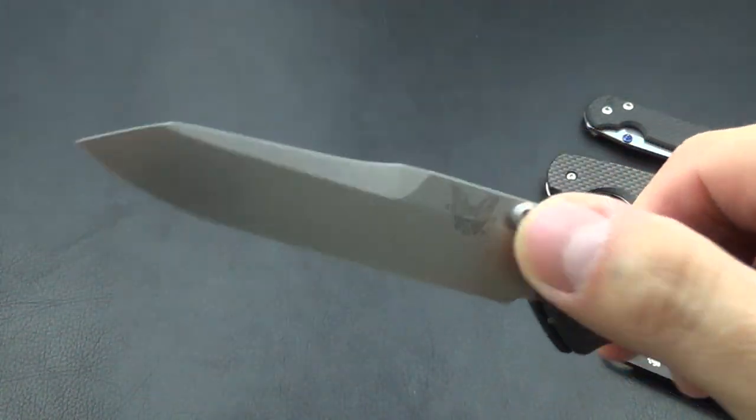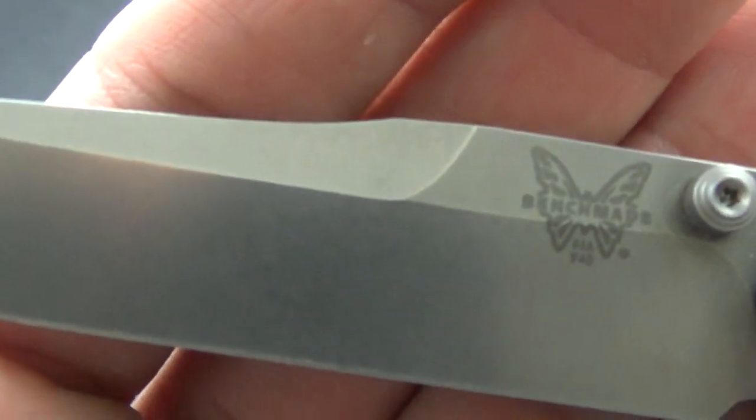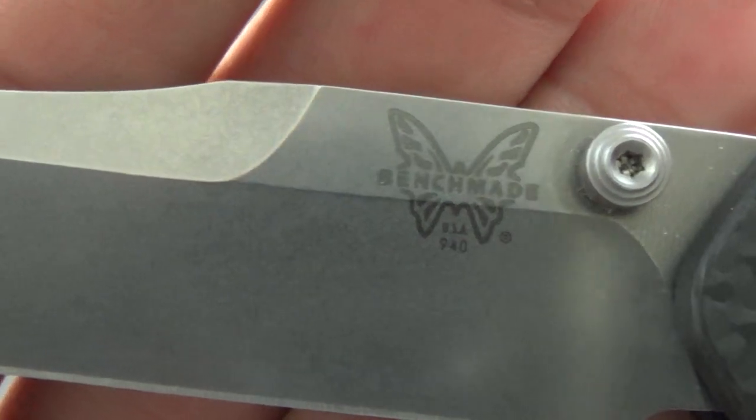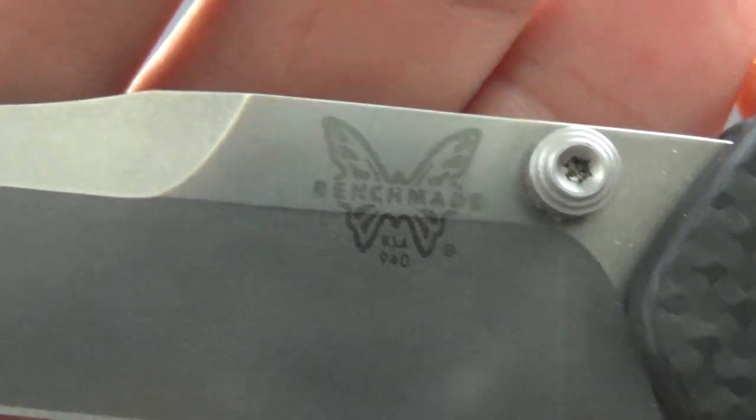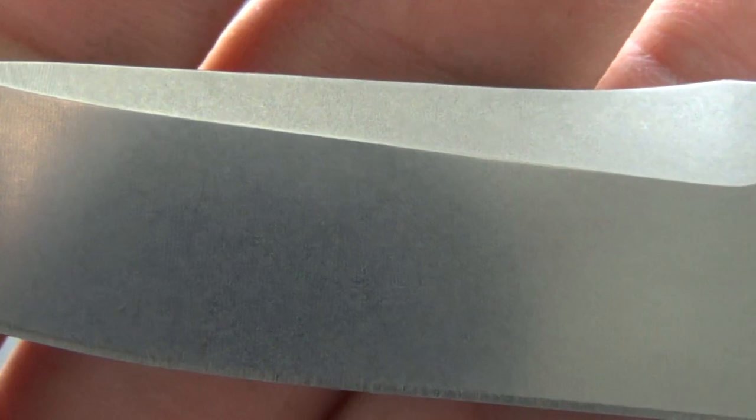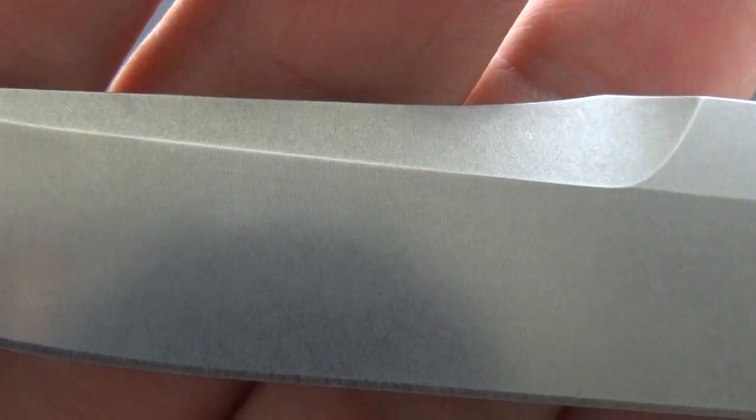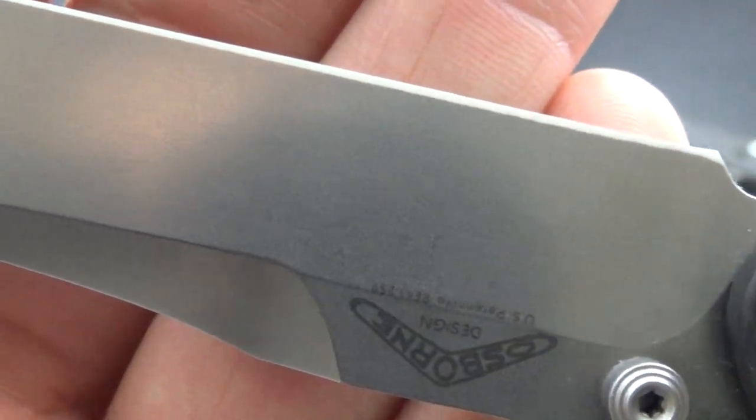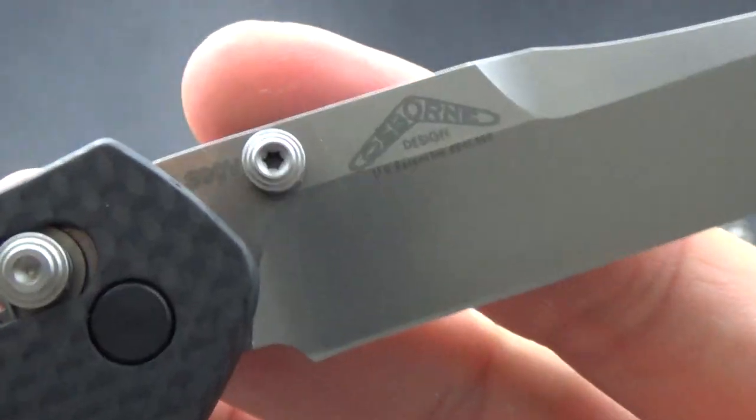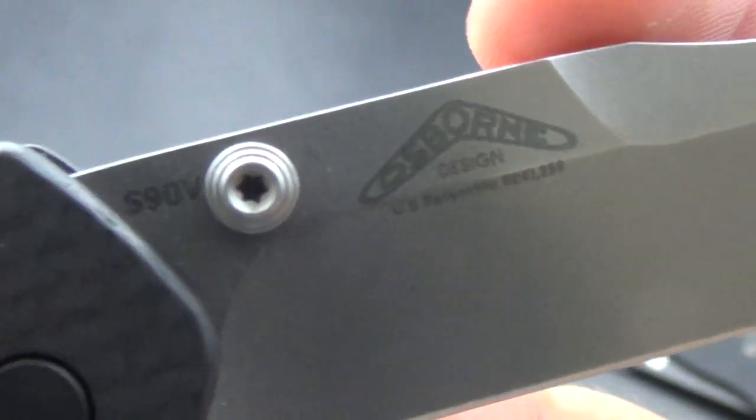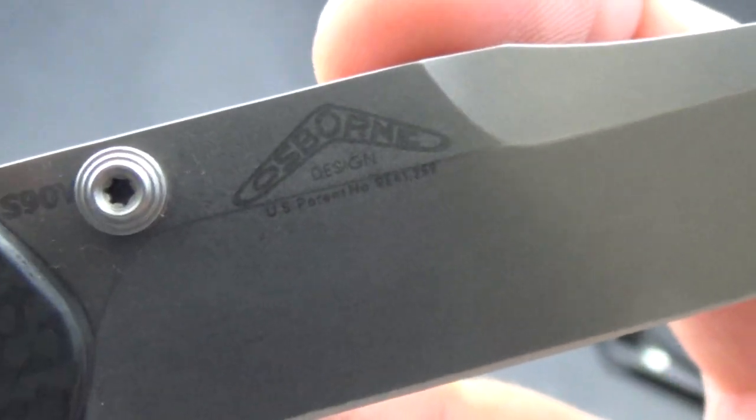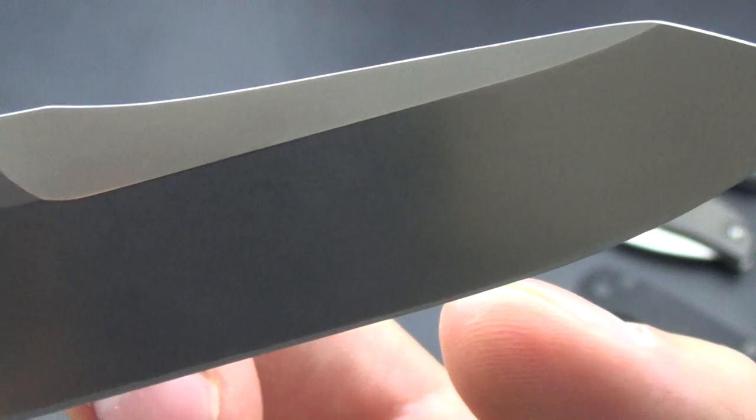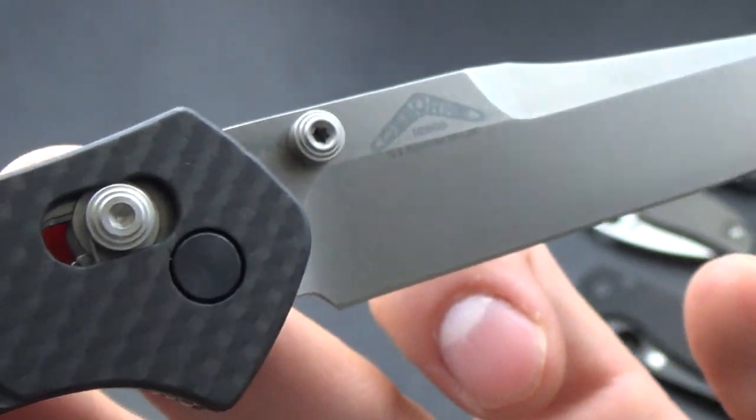But this does have a stonewash finish. I think because that S90V is so hard, you can see grind lines. Oh, there it is. Let's see if you guys can see it. You could still see the grind lines in there. You got some good shot of the blade. S90V steel. And you can see it in the light.